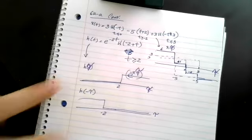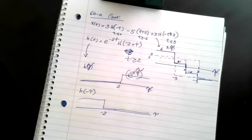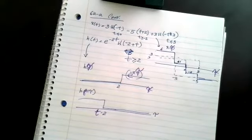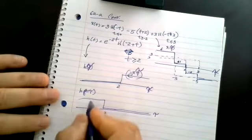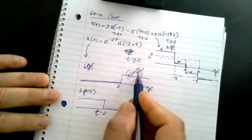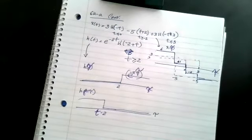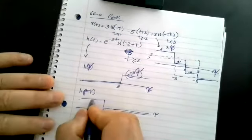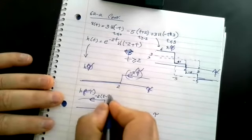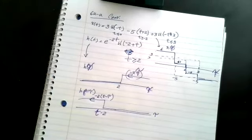The next step is to make it T minus tau, which is easy — I just throw a T in here. Now I've replaced minus tau with T minus tau. So wherever I had a T in the original expression, I replace it, and this becomes E to the minus two times T minus tau.